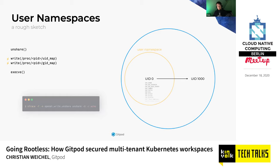In a Kubernetes pod, this is somewhat difficult, because in order to write to the UID map and GID map, you need quite far-ranging capabilities in the outer namespace — specifically capsysadmin. This is because there is no user namespace support in Kubernetes yet, which is something Kinfolk is actively working on. But it doesn't exist yet. So the capsysadmin you'd need would mean having capsysadmin on the node, and this is clearly not something we would want to give to arbitrary workloads.